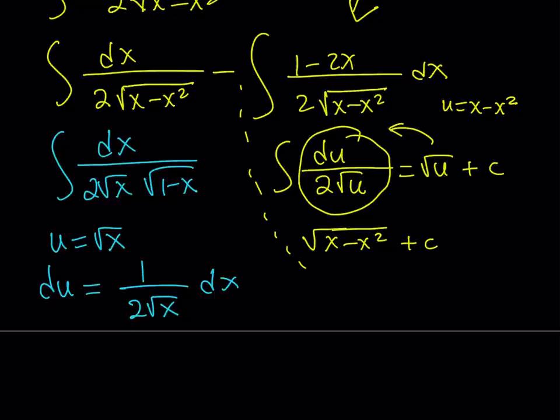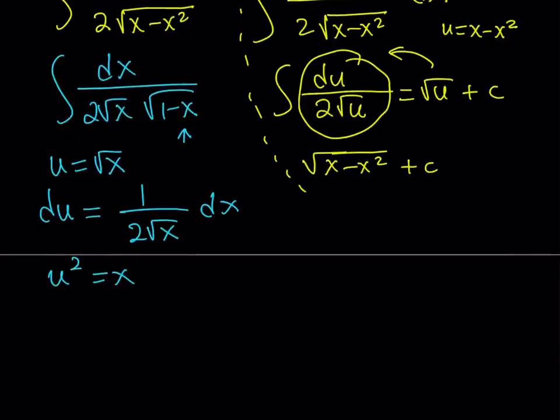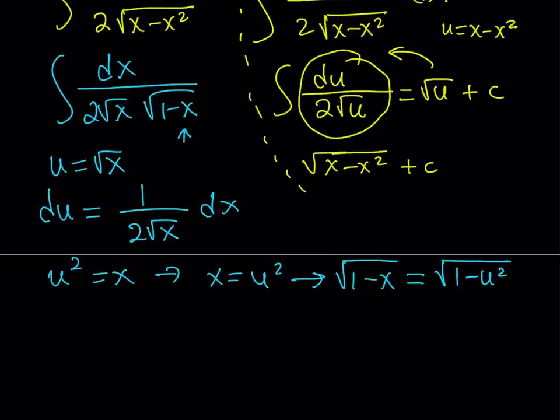What about the other one? What about this term here? We'll take care of that. Since u is equal to square root of x, we can safely say that u squared is equal to x, or x is equal to u squared. From here we can say that x is equal to u squared. Therefore, square root of 1 minus x can be written as square root of 1 minus u squared.